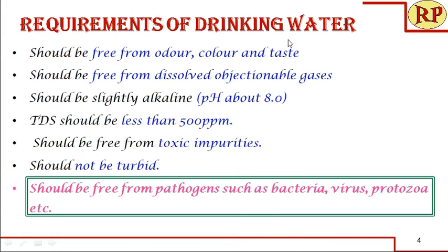There are some requirements of drinking water: it should be free from odour, colour, taste, dissolved objectionable gases, and pH should be about 8. Its TDS should be less than 500 ppm, and it should be free from toxic impurities and should not be turbid. Most importantly, it should be free from pathogens — that is, disease-causing microorganisms like bacteria, viruses and protozoans should not be present in water.